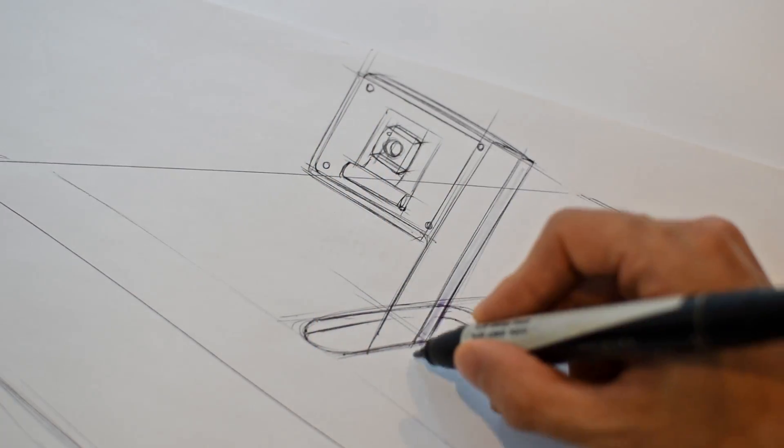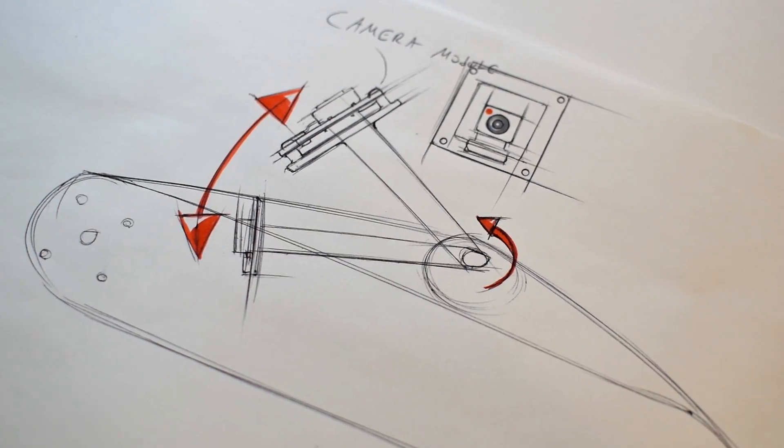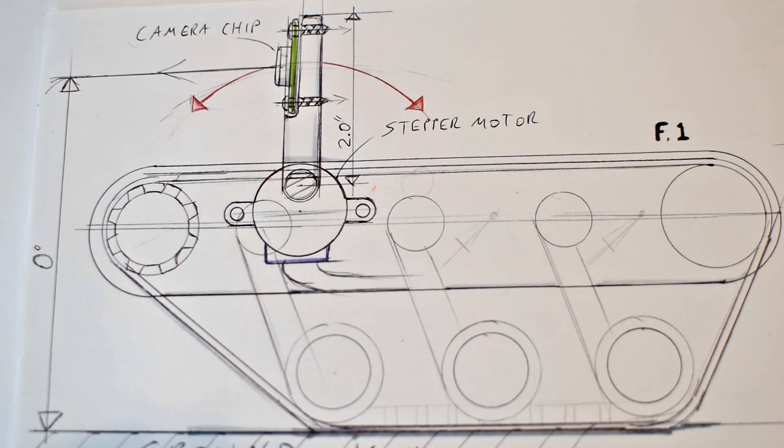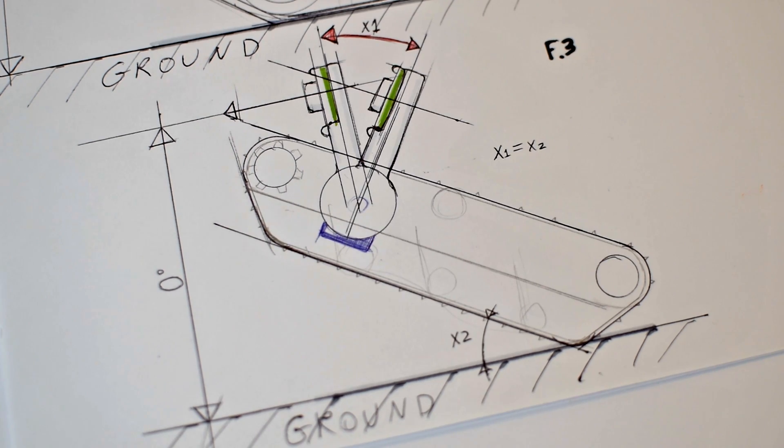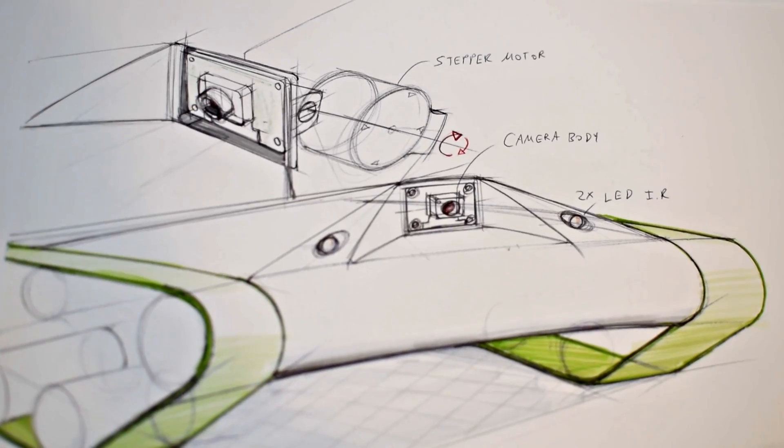The camera is also getting an upgrade. Stabilization in one axis is being achieved with a stepper motor attached to a rotating arm on the back of the camera chip.